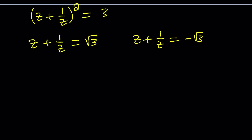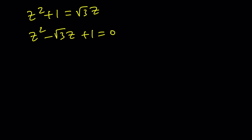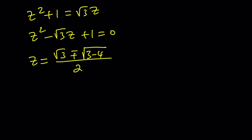We're going to multiply everything by z. So z squared plus one equals √3·z, and putting everything on the same side gives a nice quadratic equation. Solving it using the quadratic formula: negative b plus or minus the square root of b squared — which is three — minus four times a times c. This is where the complex numbers come in, because three minus four is negative one. The square root of negative one is plus or minus i, so we get (√3 ± i) / 2.